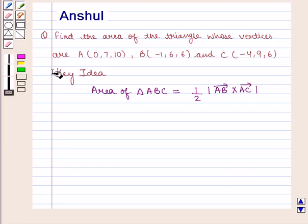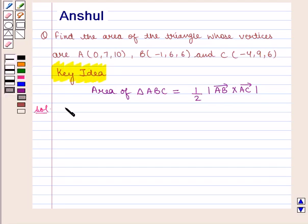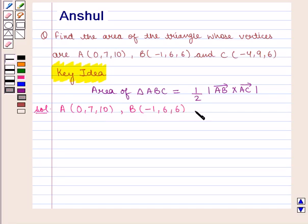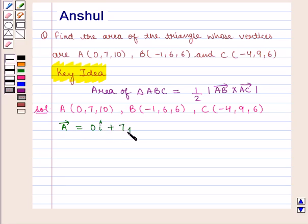With this key idea, let us proceed with the solution. We are given point A with the coordinates (0, 7, 10). The position vector of A is given by 0 i-cap plus 7 j-cap plus 10 k-cap.